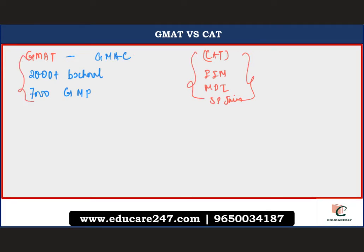GMAT gives you access to Indian as well as foreign B-schools. Deciding between GMAT versus CAT is a dilemma faced by countless Indian aspirants. Both serve as stepping stones to an MBA program, but your career goals should factor into the decision. One major difference is fees: GMAT costs 250 dollars plus taxes, whereas CAT is around 2,000 rupees or less.